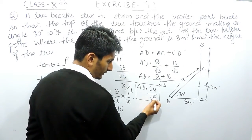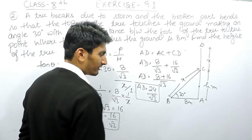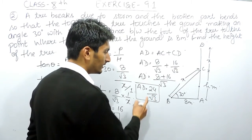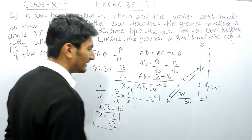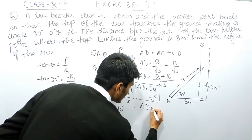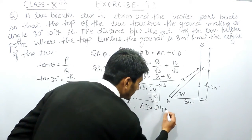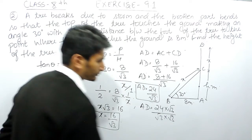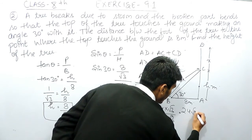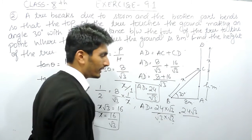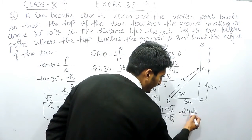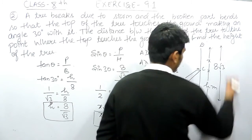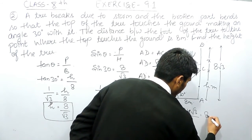Now, whenever there is a number with a square root in the denominator, you have to rationalize it — without rationalizing the solution becomes very difficult. To rationalize 24/√3, multiply numerator and denominator by √3: this gives 24√3 / (√3 × √3) = 24√3 / 3 = 8√3. So the complete height of the tree equals 8√3 meters.